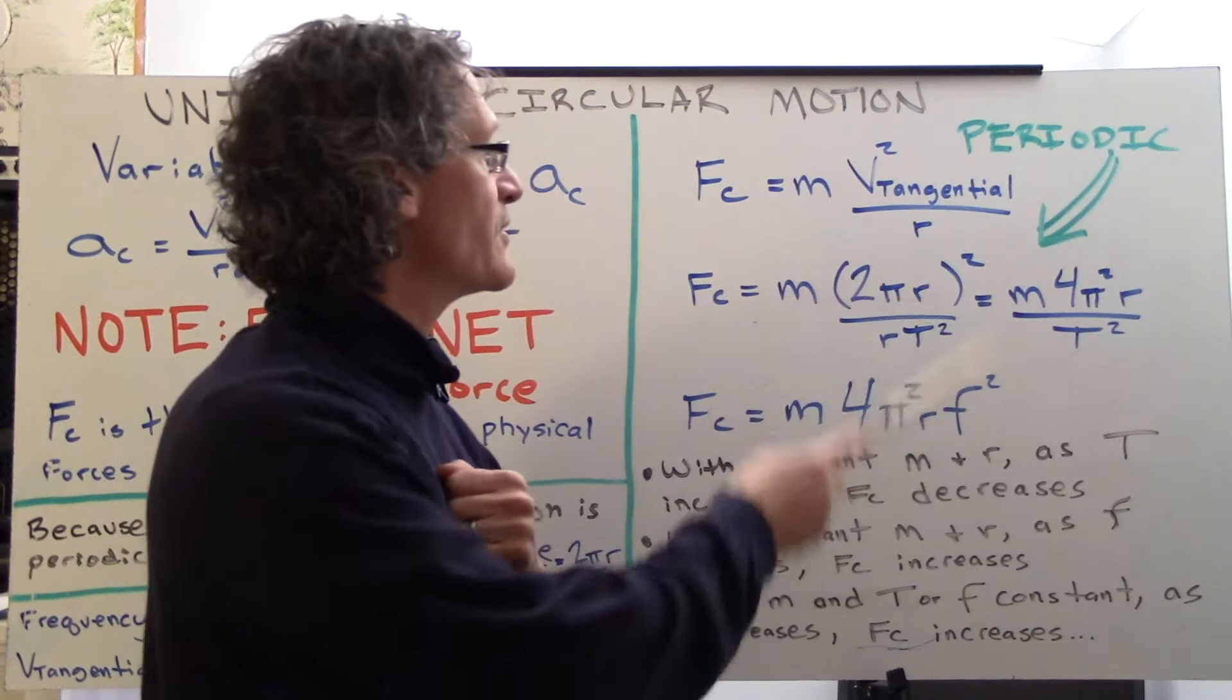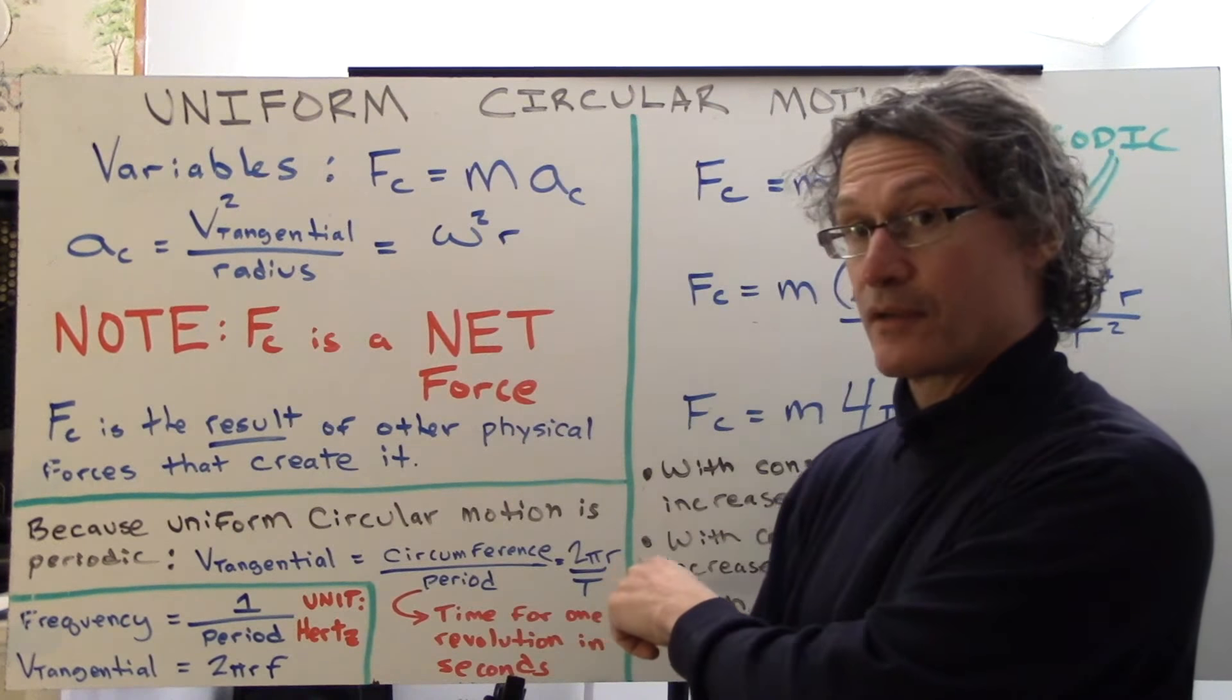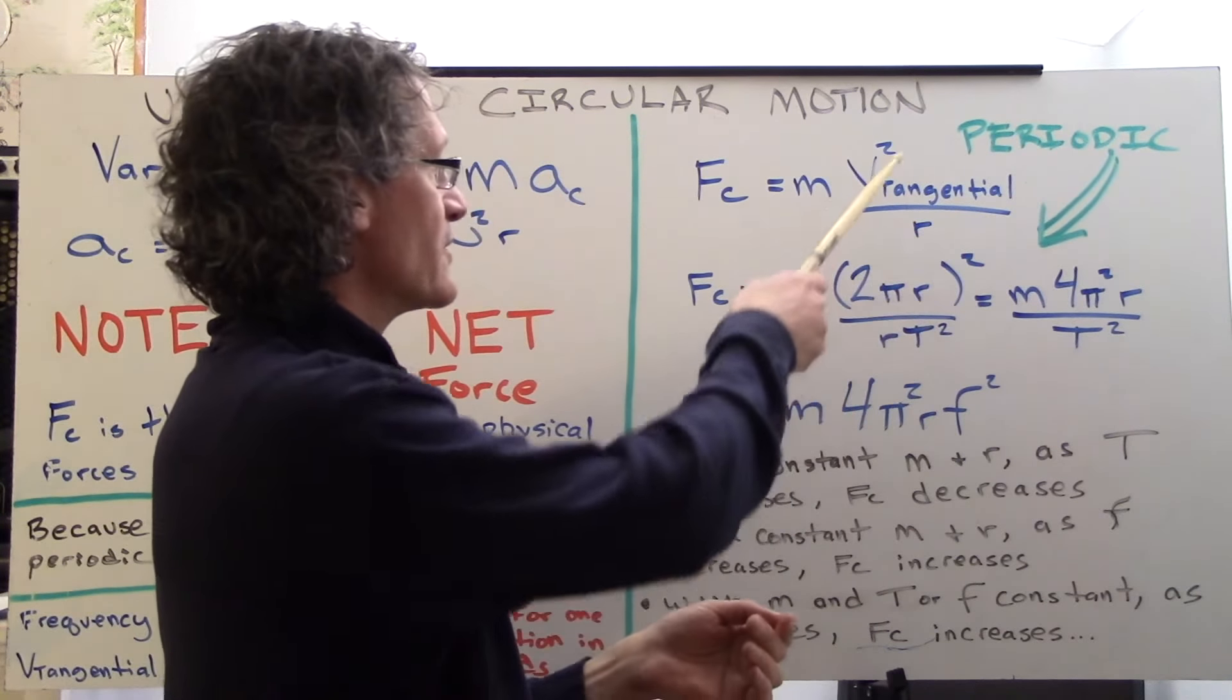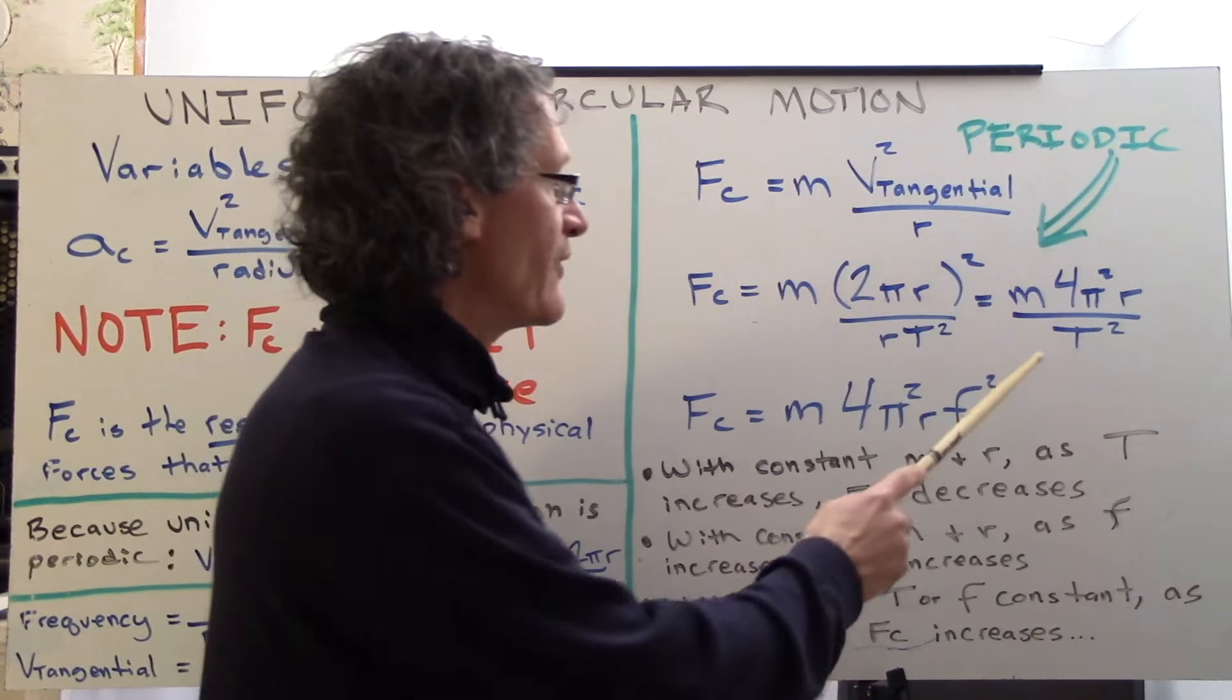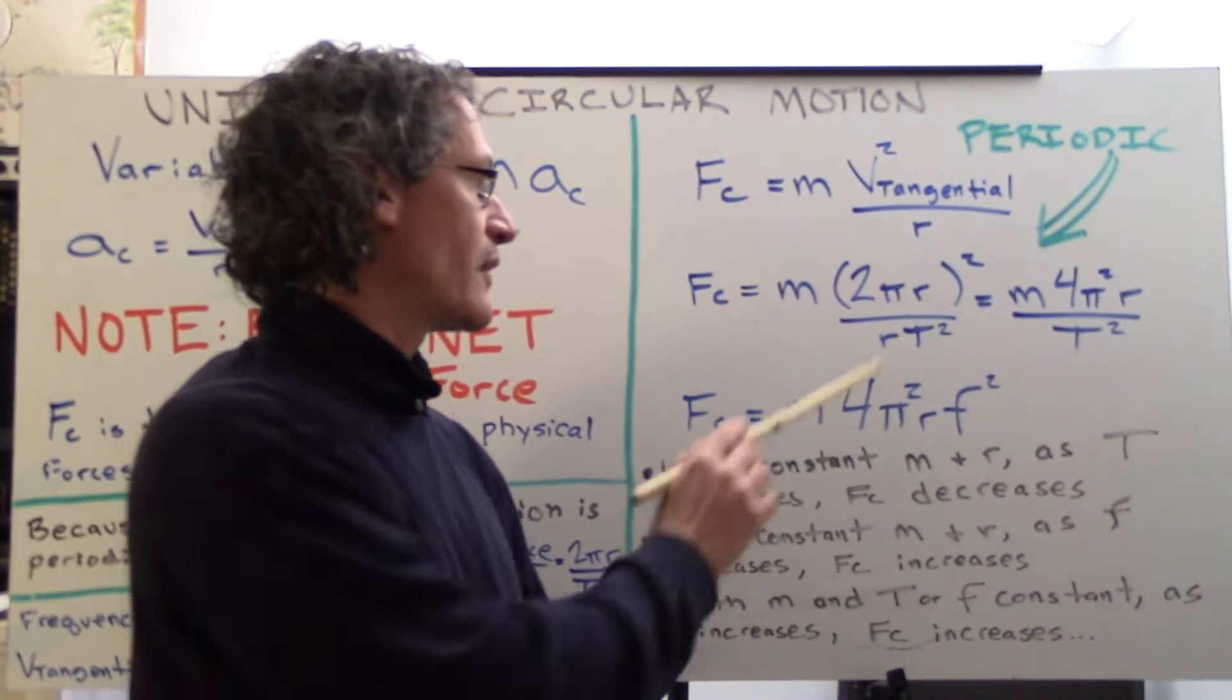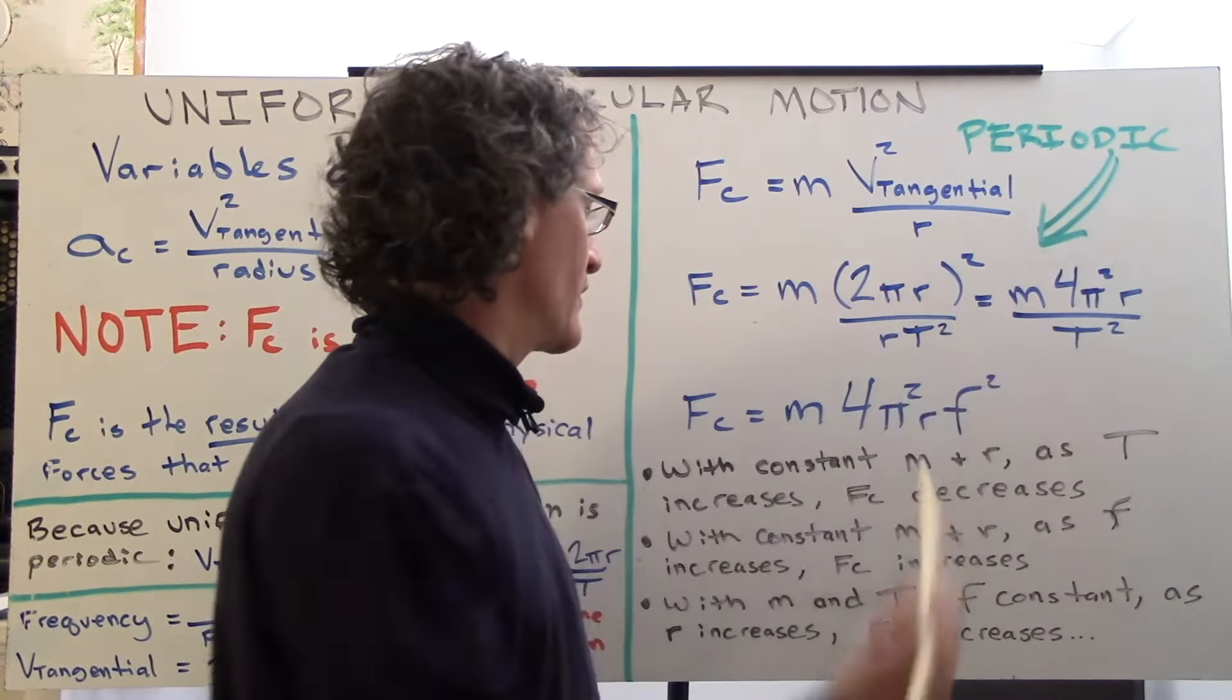Centripetal force is mass times v tangential squared over r. So v tangential, as we saw here, was 2πr over T. We're going to substitute that in. Boom. 2πr over T. Now this is squared because of v tangential squared, so this whole thing gets squared and the T gets squared. And so what we have here is m 4π²r over T². Notice we had an r² in the numerator and an r down here in the denominator from that one. And so one of them cancels and we have this left over.